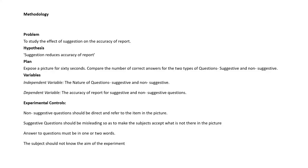The next topic under methodology is experimental controls — what controls the experimenter puts in place to get a very structured environment for the experiment. The fourth control is that non-suggestive questions should be direct and refer to an item in the picture. For example, if the image has a tree, the non-suggestive question would be: 'Was there a tree? Yes or no.' That is very direct with no ambiguity.